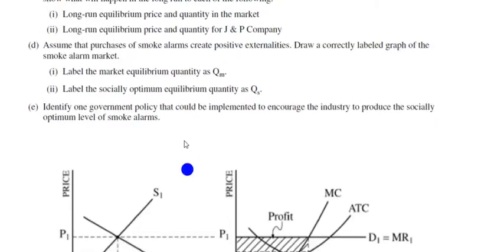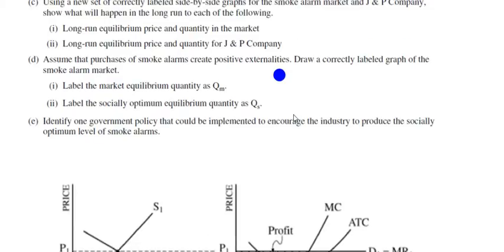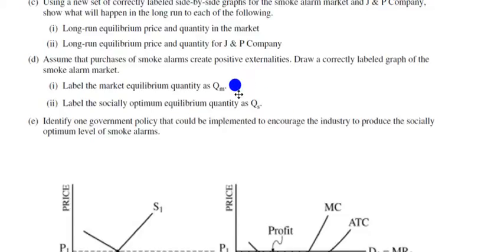Now we assume that purchasers of smoke alarms create positive externalities — because the town pays less in fire damage, the fire department works less, and so on. We want a correctly labeled graph of the smoke alarm market showing both the market equilibrium quantity and the socially optimum quantity.